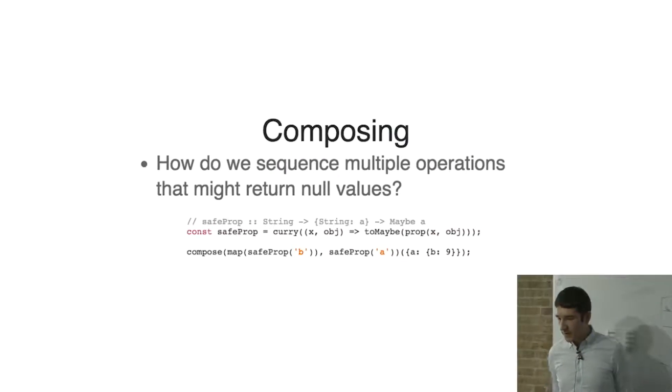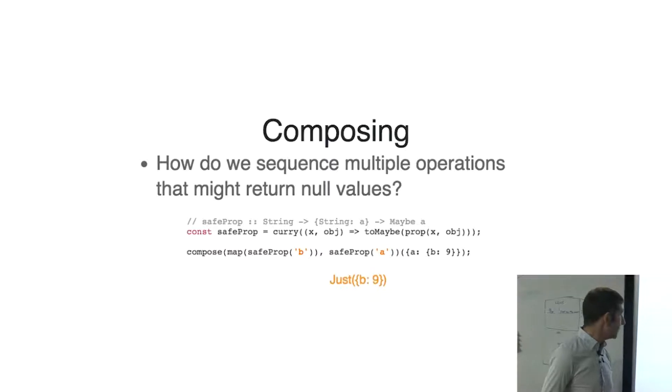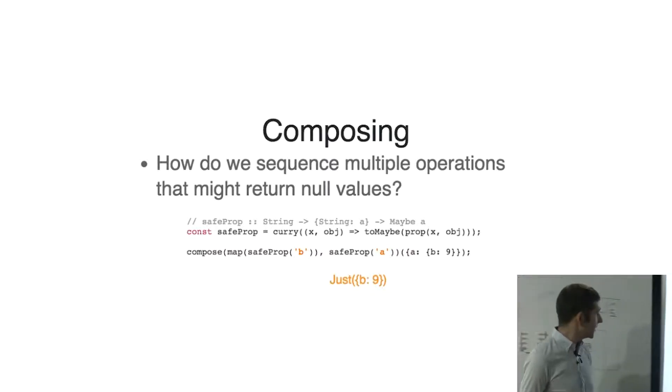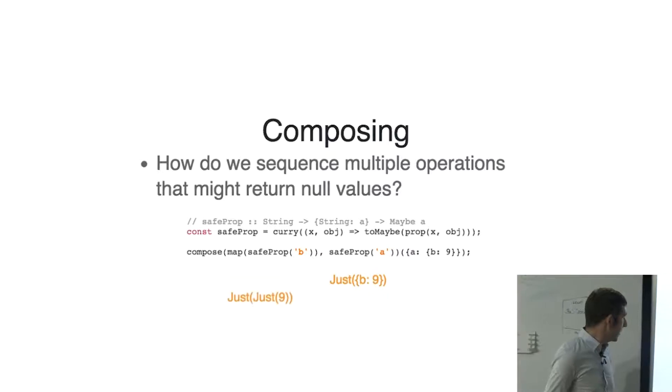So how do we compose these things together? We might have multiple operations that could fail. So we want to see how we can chain these together. So using what we've seen, let's see how would we go about composing these options? So let's use map. Okay, that's great. We've created this safe property function. And it succeeded. So let's apply map again. Okay, that's absolutely useless. So we've basically wrapped this thing. And if we want to do this again, we're going to have to do map map and then map map map. And we're just going to get this hideously nested structure.